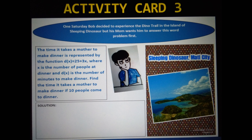Activity Card 3. One Saturday, Bob decided to experience the dino trail on the island of Sleeping Dinosaur, but his mom wants him to answer this word problem first. The time it takes a mother to make dinner is represented by the function d of x equals 25 plus 3x, where x is the number of people at dinner and d of x is the number of minutes to make dinner. Find the time it takes a mother to make dinner if 10 people come to dinner.